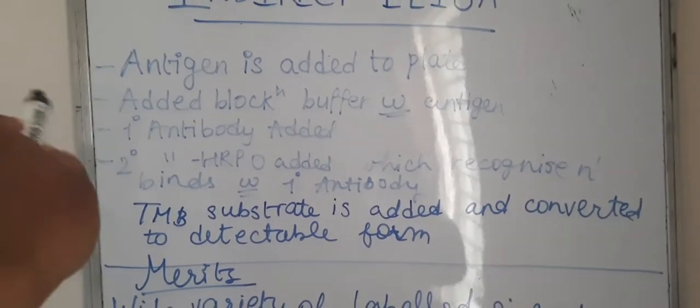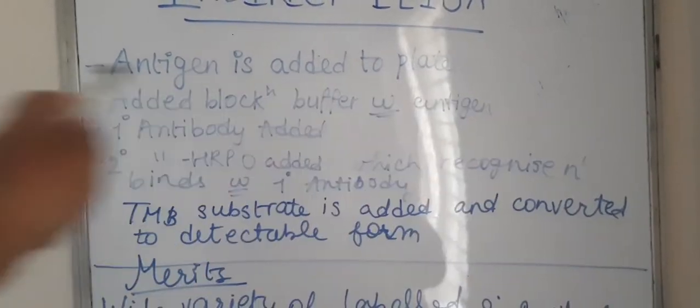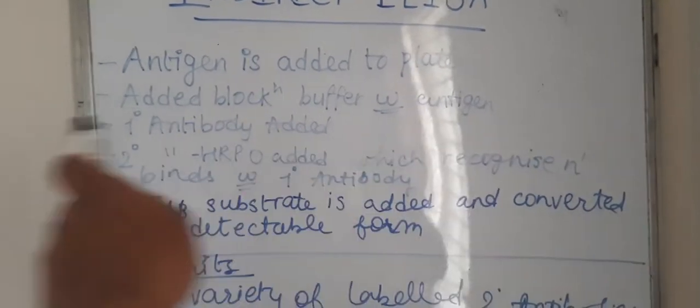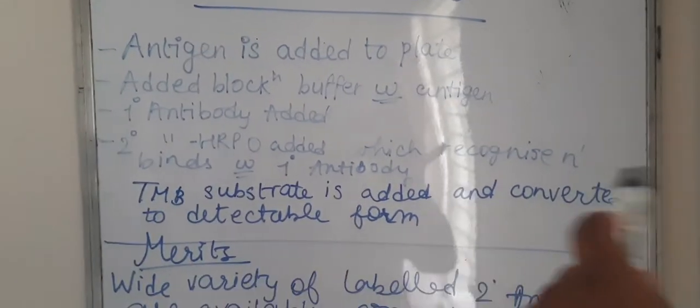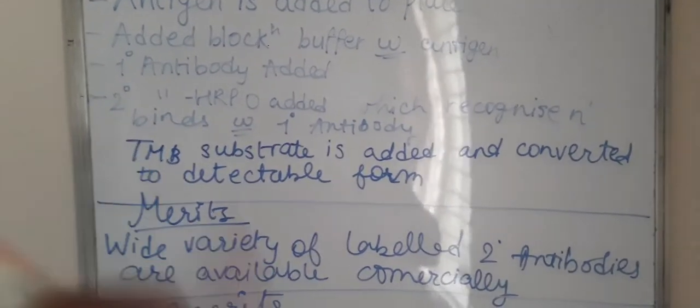First antigen is added, then blocking buffer with antigen, then primary antibody, then secondary antibody.